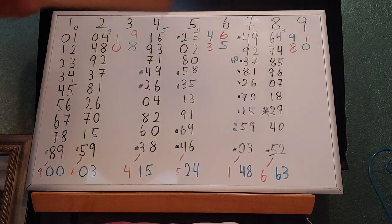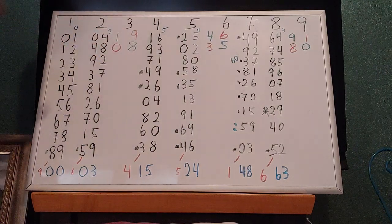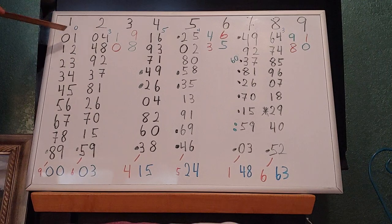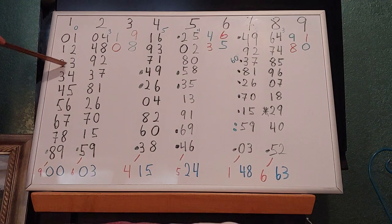We'll just get on with the arithmetic and I'll remind everybody how to do that. So what we have is: 1 squared is 1, 11 squared is 121, 111 squared is 12321.